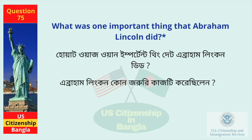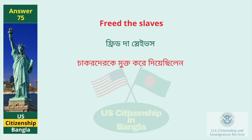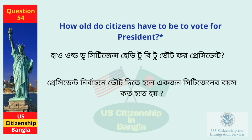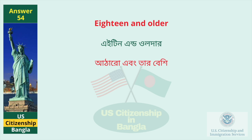What was one important thing that Abraham Lincoln did? Freed the slaves. How old do citizens have to be to vote for president? 18 and older.